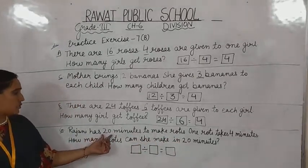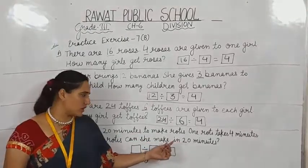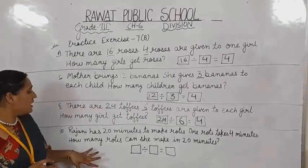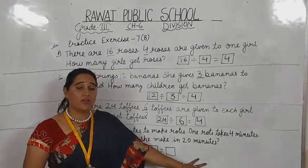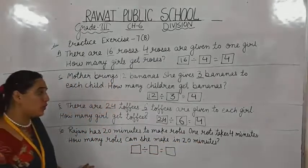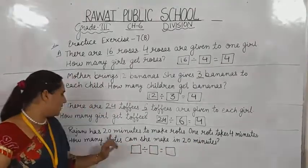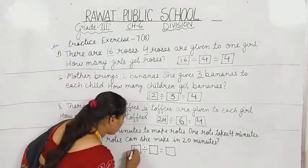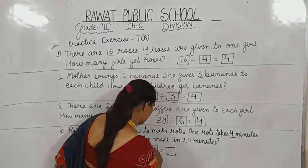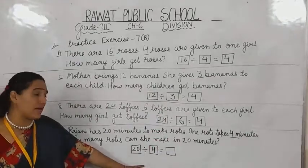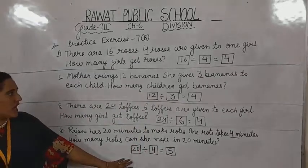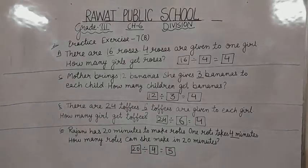Question 2g: Rajani has 20 minutes to make rotis. One roti takes 4 minutes. How many rotis can she make in 20 minutes? We write 20 in the first box and 4 in the second box. When we divide 20 by 4 our answer is 5. She can make 5 rotis in 20 minutes. I hope you all understood Exercise 7b. Thank you so much, stay safe, stay healthy.